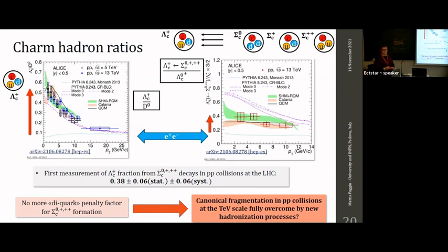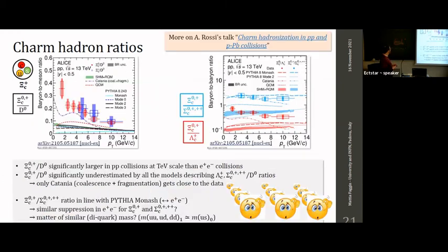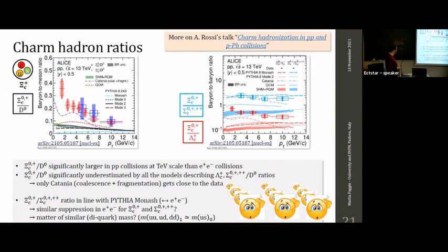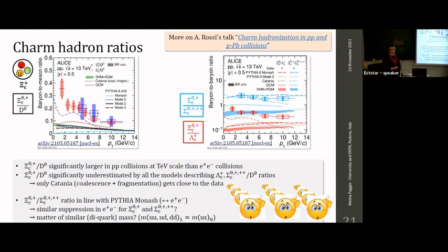A question is raised about whether measurements exist in proton-lead or lead-lead collisions. At the moment, only proton-proton results are published — there are no published results in other collision systems yet. Analyses are ongoing but not advanced enough for preliminary results. For lead-lead collisions, the larger statistics and upgraded ITS detector are expected to allow precise measurements, but nothing is available at the moment.